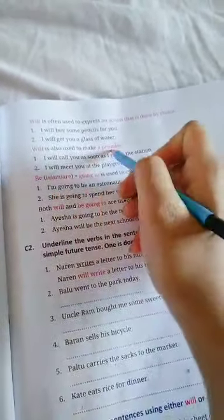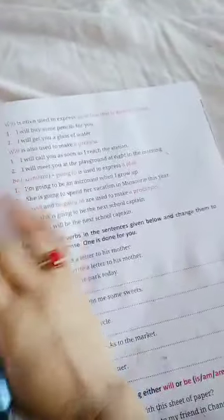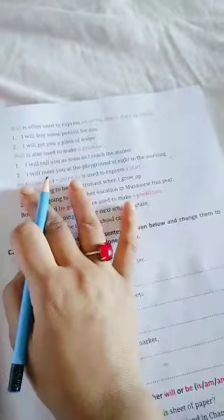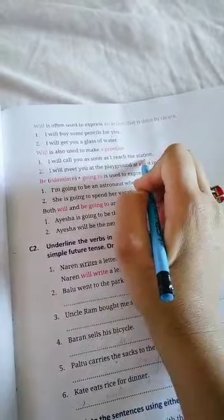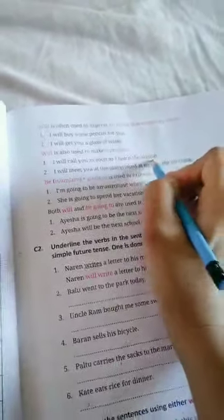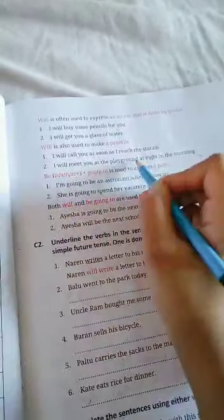Will is also used to make a promise - when we make a promise to someone about the future. Like: I will call you as soon as I reach the station. This is a type of promise - as soon as I reach the station I will call you. I will meet you at the playground at eight in the morning. Tomorrow morning at 8 I will meet you at the playground. This is kind of promise.